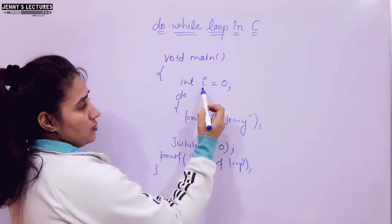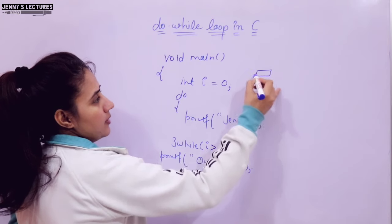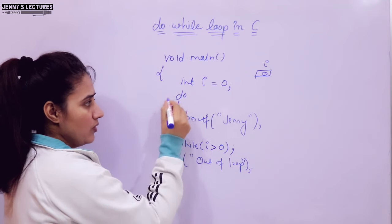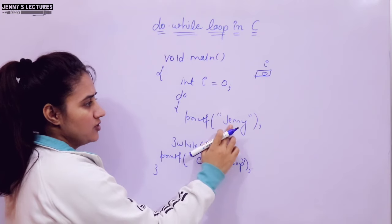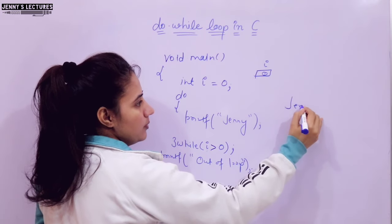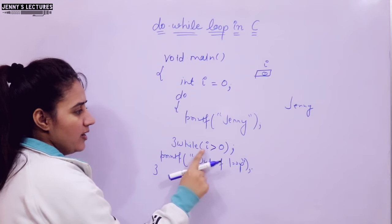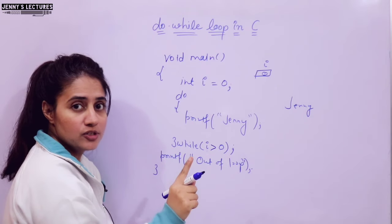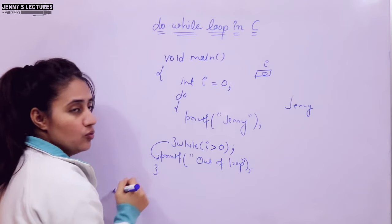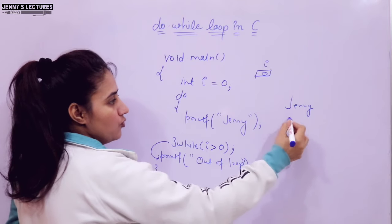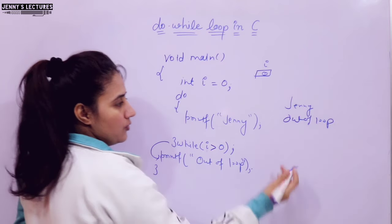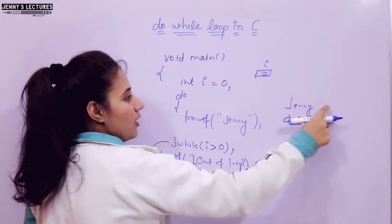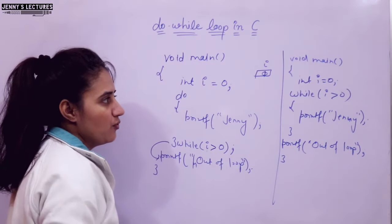Let us see this with the help of a program. I am taking a variable i and initializing it with 0. In the body of the do-while loop, control will enter without any condition check — printf jenny. So on the output screen, 'jenny' would be printed once. Now we check the condition: while i greater than 0. i is 0, and 0 is not greater than 0, so condition is false. It will not enter again; it will go out of the loop and print 'out of loop'.